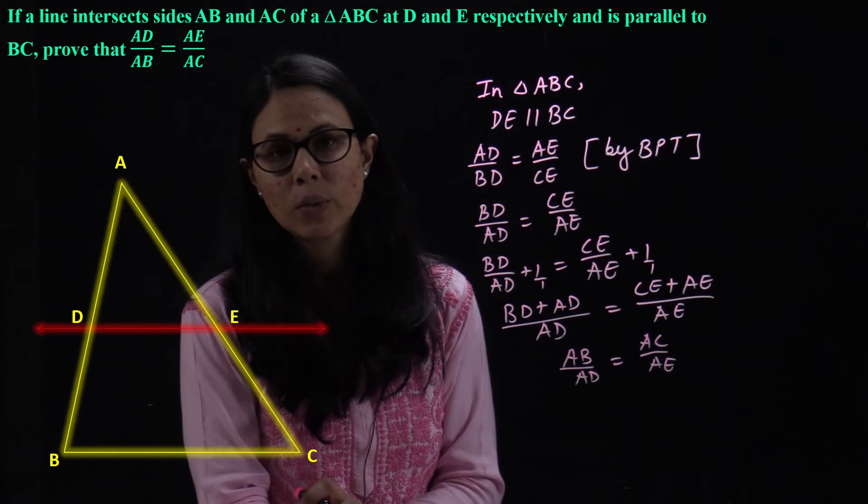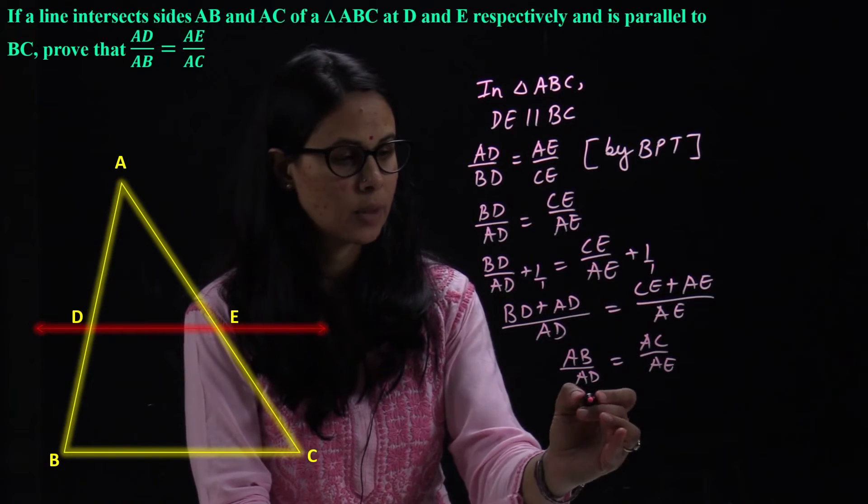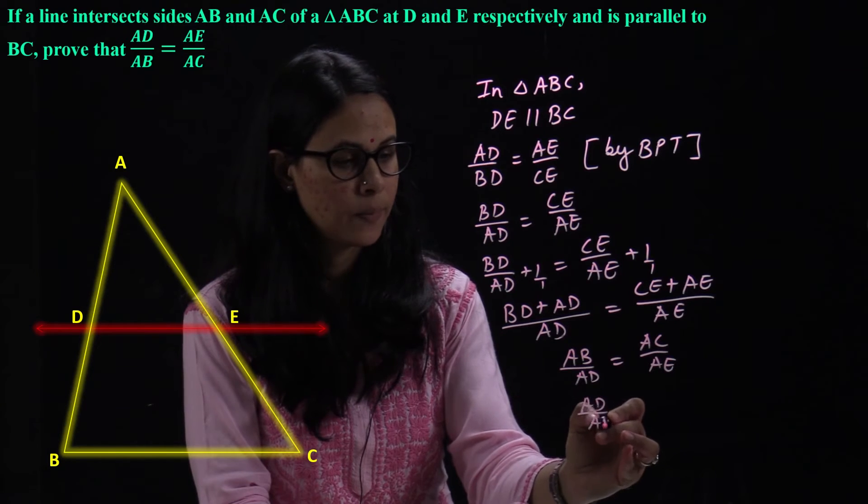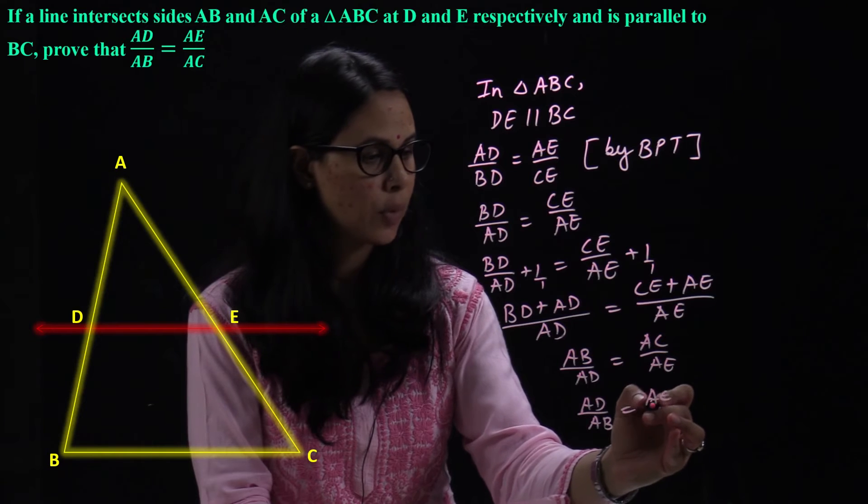Again, the whole equation we will reciprocal. Left hand side also reciprocal and right hand side also. So, it becomes AD upon AB is equal to AE upon AC.